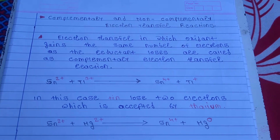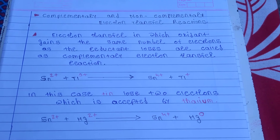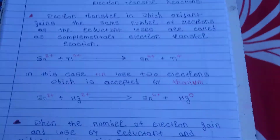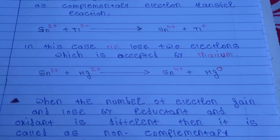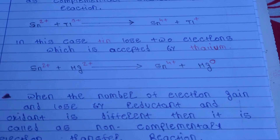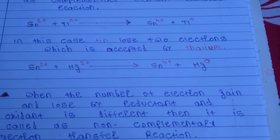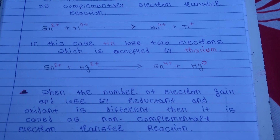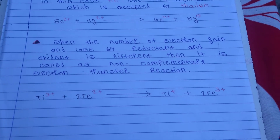The oxidant gains two electrons and the reductant loses two electrons — the number of electrons gained and lost by the reductant and the oxidant is the same. This is complementary electron transfer. Second example: Sn²⁺ plus Hg²⁺ gets converted into Sn⁴⁺ plus Hg⁰. In this case, Hg transfers two electrons and Sn gains two electrons, so the gain and loss of electrons is the same — this is complementary electron transfer.